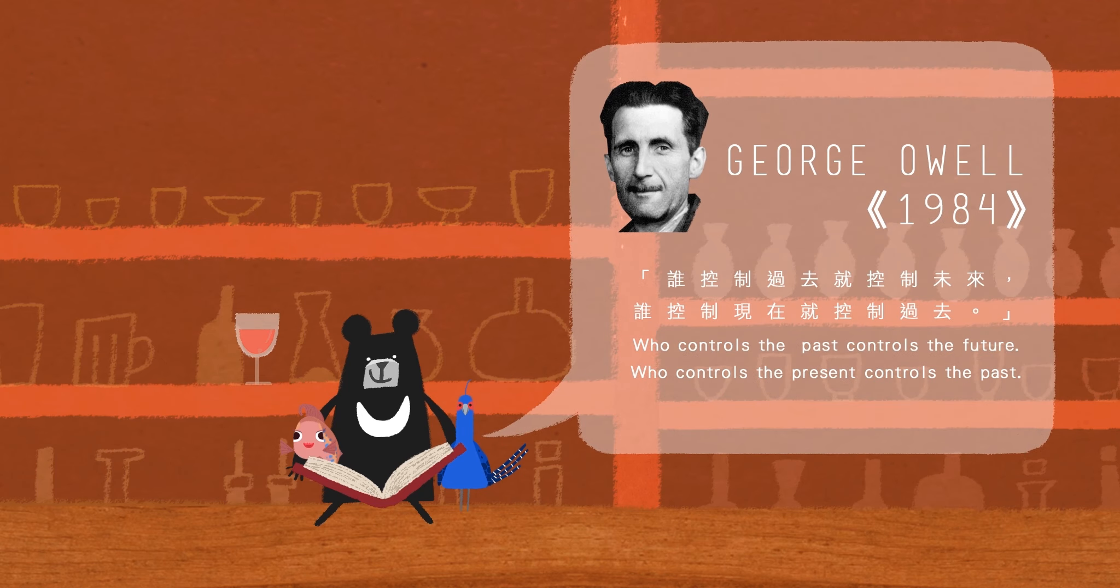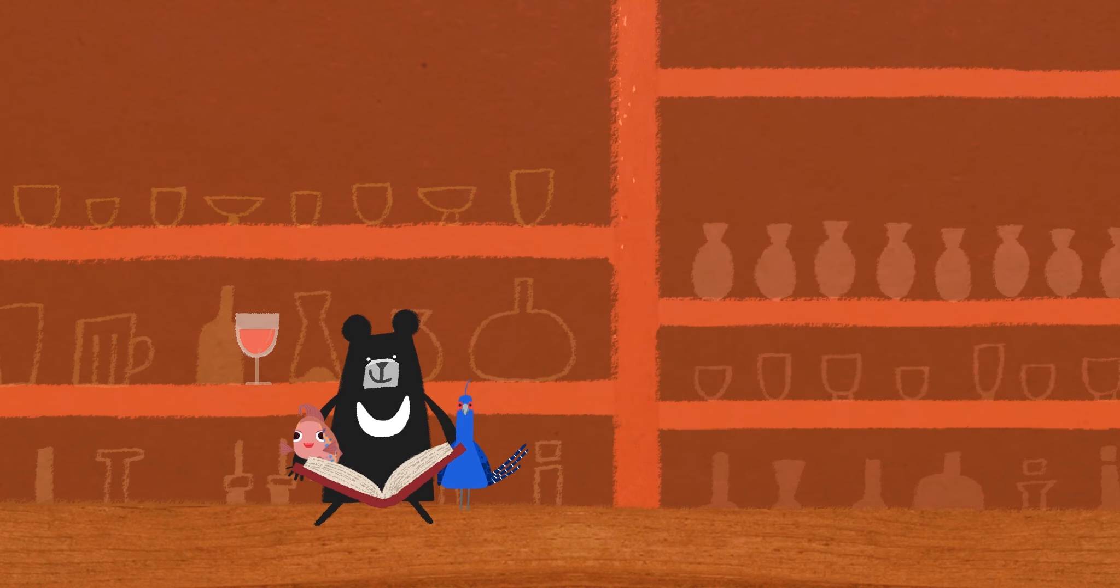In 1984, George Orwell said, He who controls the past controls the future. He who controls the present controls the past. Who controls Taiwan's past today? You, isn't it? Those of you in front of the screen right now.